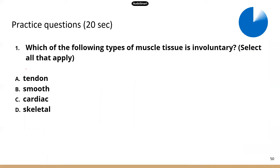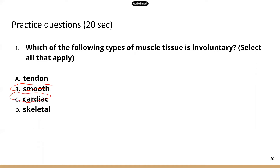Here's a practice question: which of the following muscles is involuntary? Select all that apply. The answer is smooth and cardiac — you can't control your heartbeat, and you can't control the movement of your bowel or the constriction or dilation of your blood vessels. B and C are the correct answers. Also, tendon is not a type of muscle tissue — tendons are made up of very tough connective tissue, not muscle tissue. That's why A is not the correct answer.